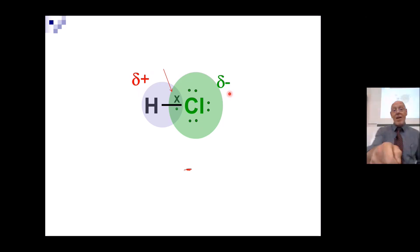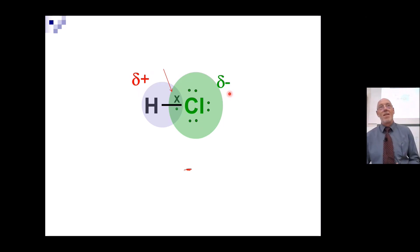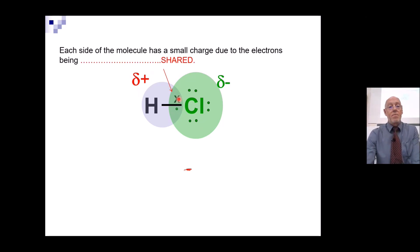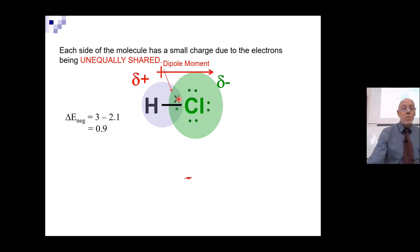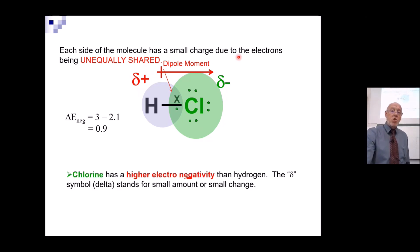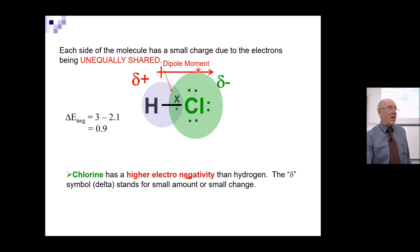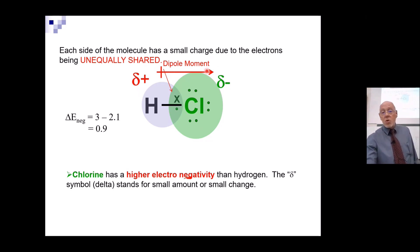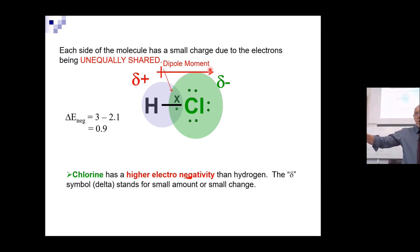HCl is another example. So here we've got a polar molecule — a polar covalent bond. Each side of the molecule has a small charge due to the electrons being unequally shared. They use the term dipole moment. It means the electrons are pulled across in one direction. This arrow with a cross on one side shows which way the electrons have been attracted — that's a dipole moment, and they turn out to be quite useful.